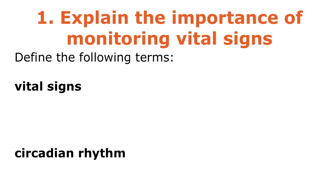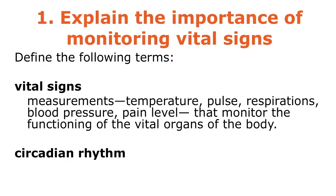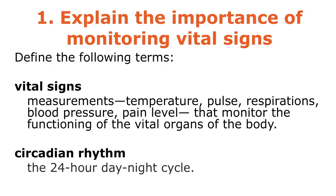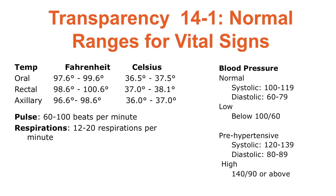Vital signs are the measurements of temperature, pulse, respiration, blood pressure, and nowadays we also include pain level. These monitor the functioning of the vital organs of the body. A circadian rhythm is the 24-hour day-night cycle — a full day.